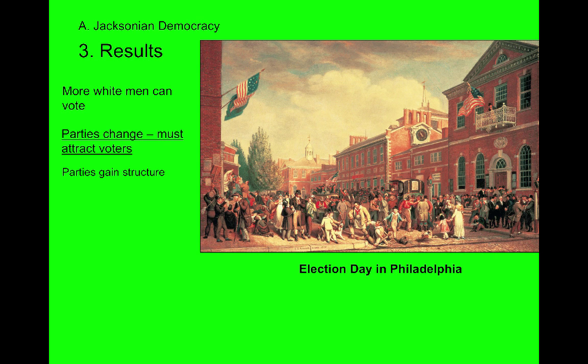To reach all these new voters, parties developed hierarchy: somebody in charge of getting votes in each state, further divided by county, then precinct or ward, then neighborhood. Because so many people are now voting, the task of mobilizing them is enormous and requires organization. Today both Republicans and Democrats have party chairmen and people in charge of each state and city — all trying to organize people and convince the common man to vote for their party.